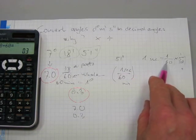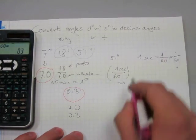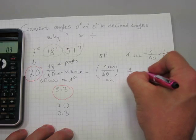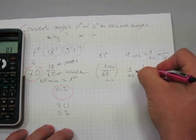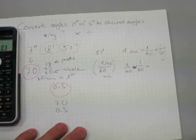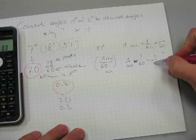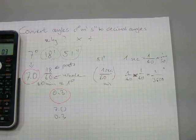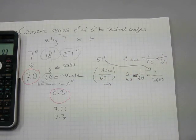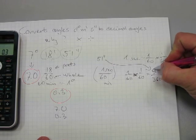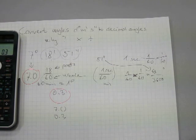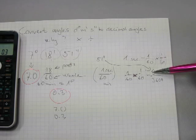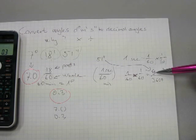Now 1 over 60 times 1 over 60, standard fraction multiplication here, is 1 over 3600 because 60 times 60 is 3600. So consequently, 51 seconds is 51/3600 of a degree, and this is how it was made up: because 51 is 51 parts out of something that has 60 as a whole.